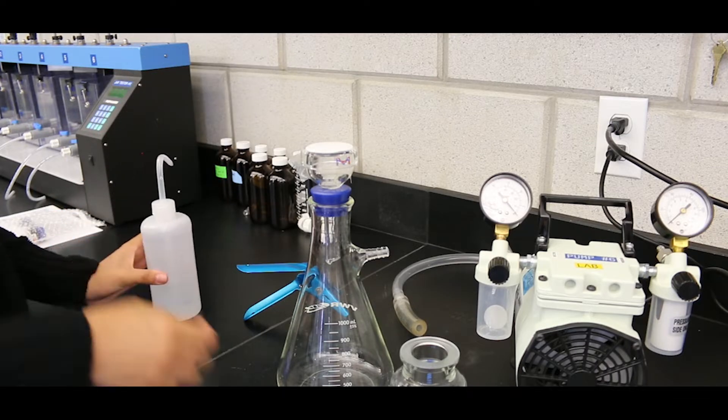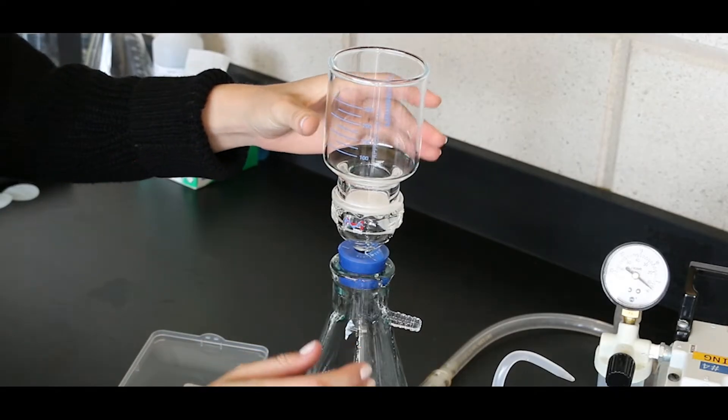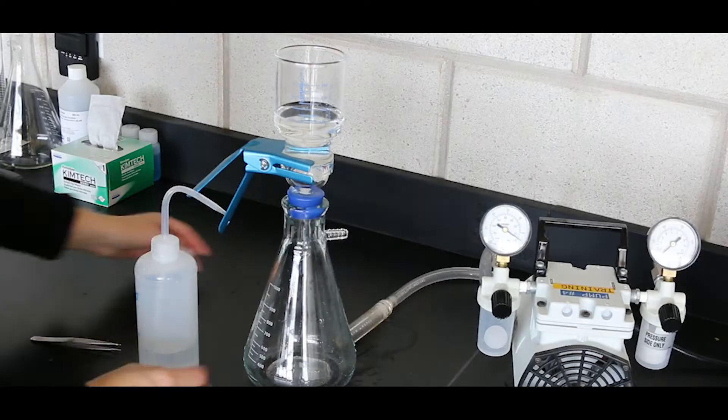Wet the filter and place the funnel on top, securing it with a clamp. Connect the vacuum tubing to the filter flask.